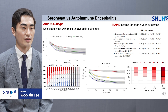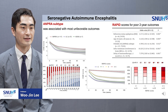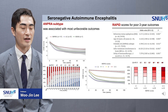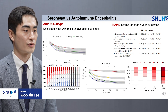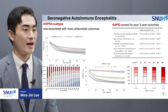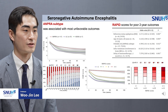Based on the regression model, we constructed a scoring system that predicts poor two-year outcomes, which is a RAPID score consisting of 5 early utilizable clinical factors: refractory status epilepticus, age of onset of 60 years or higher, probable AE of ANPRA subtype, infratentorial involvement on MRI, and delay of immunotherapy for more than one month. The RAPID score showed good correlation with two-year outcomes: 80% of patients with RAPID score 0 or 1 had good outcomes, whereas only 40% of patients with score 2 and 20% of patients with scores 3 or higher achieved a good outcome.